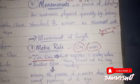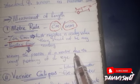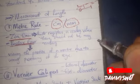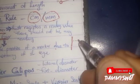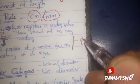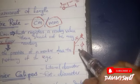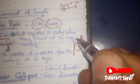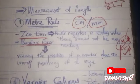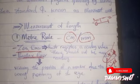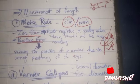You can also have error due to parallax. This is when you are viewing the position of the marker in the wrong way. The eye of the person is supposed to be horizontal — not viewing from an angle. If your eye is not horizontal to what you are reading, that is error due to parallax.